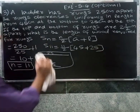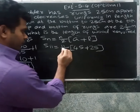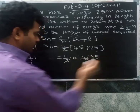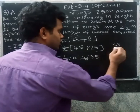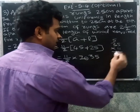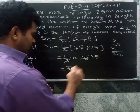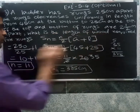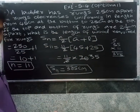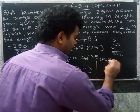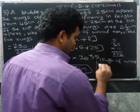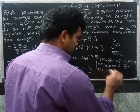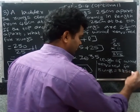45 plus 25 equals 70. Then 11 divided by 2 into 70: that gives us 385. So the length of wood required for the rungs equals 385 centimeters.